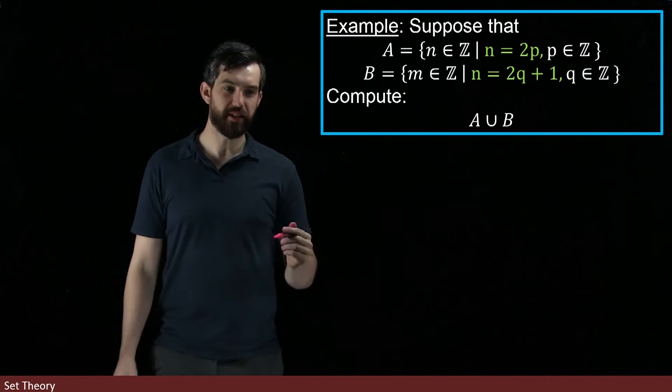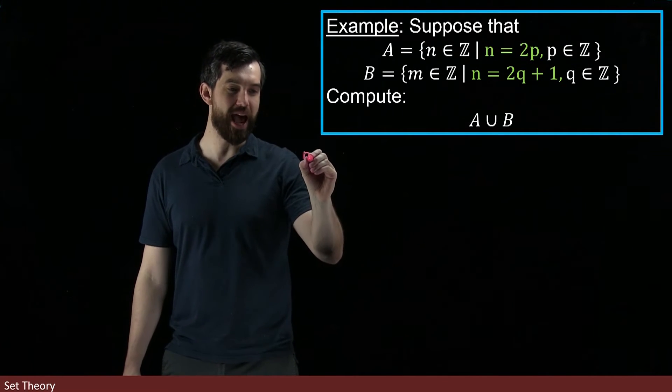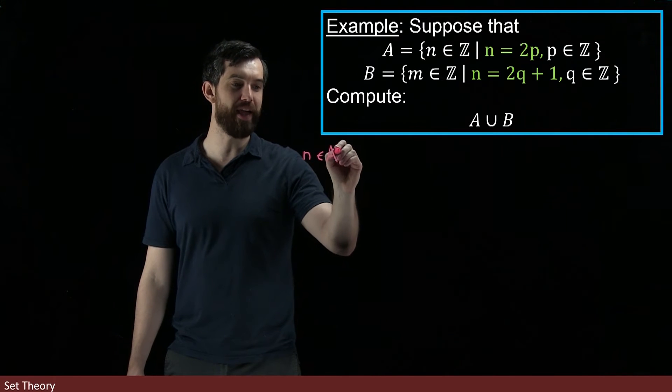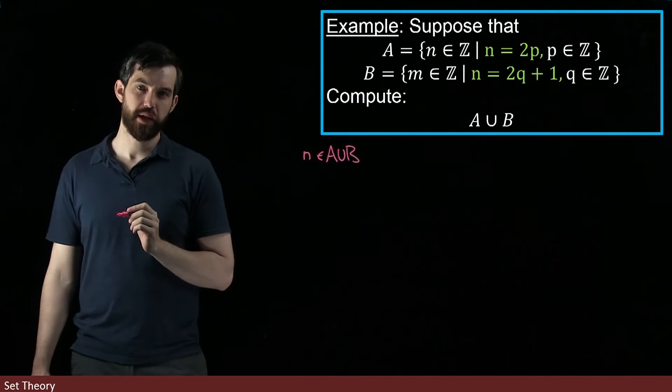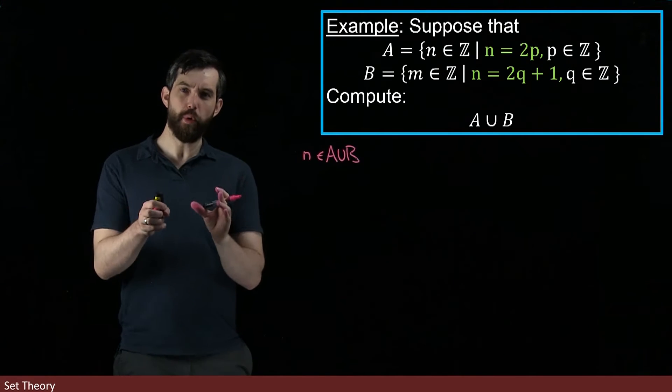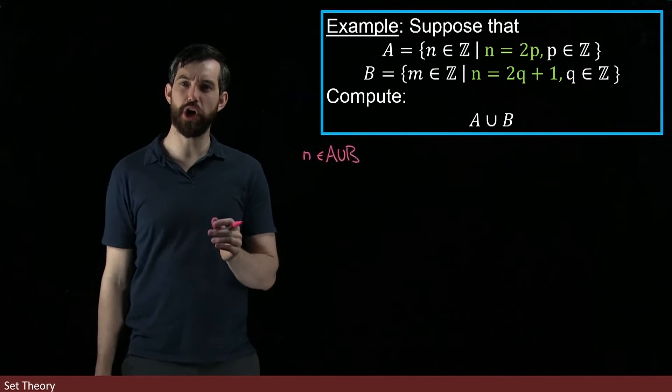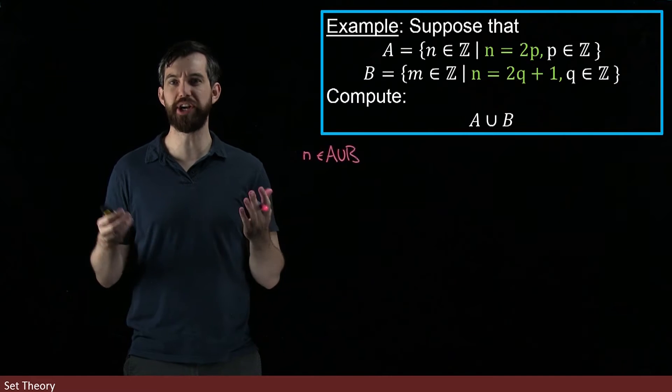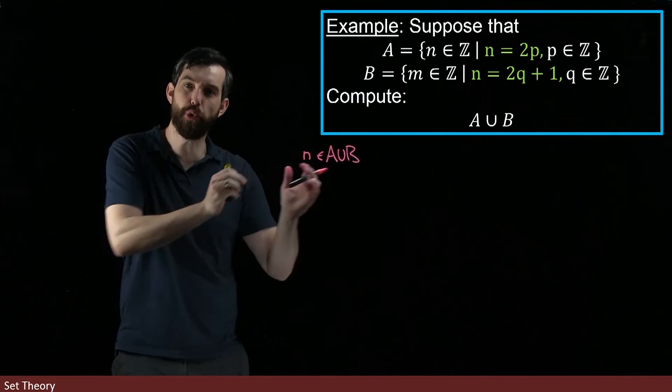To prove this, let's begin with an n which is an element of A ∪ B. Note that what we're trying to do is show an equality of sets—that A ∪ B equals the integers.